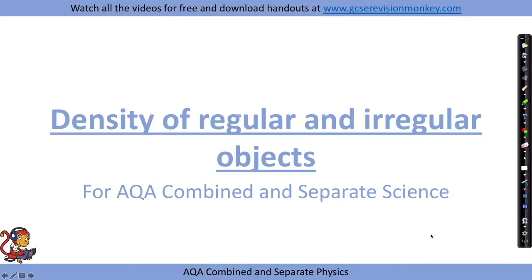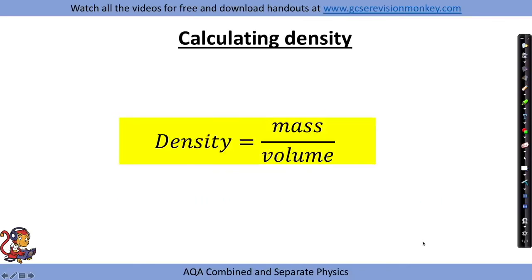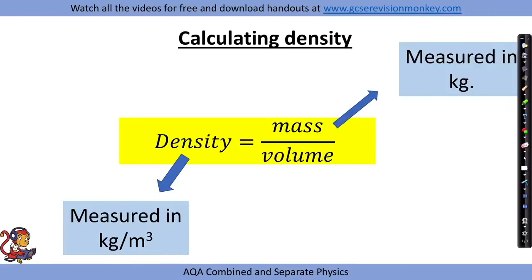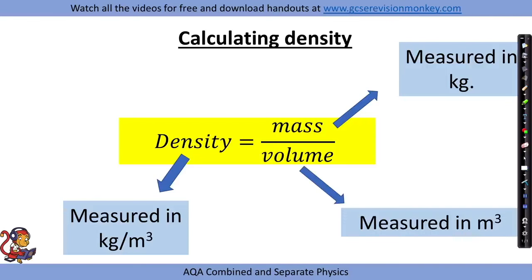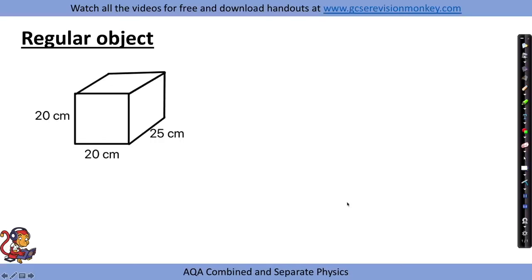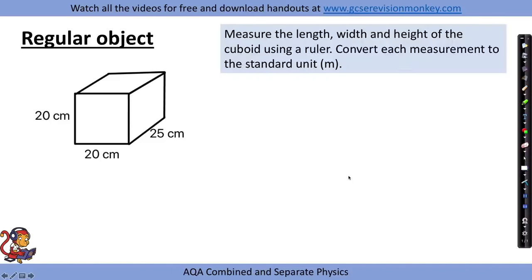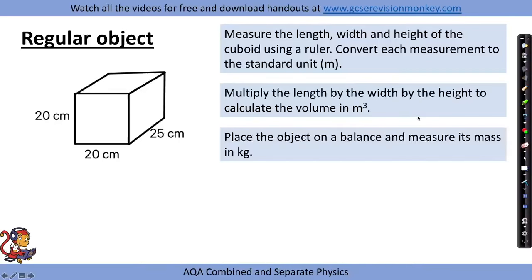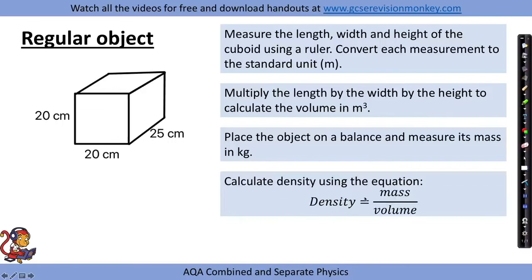For the density of regular and irregular objects required practical, we use the equation: density equals mass divided by volume, where density is in kg/m³, mass is in kilograms, and volume is in metres cubed. For a regular object like a cuboid, measure the length, width, and height using a ruler and convert each measurement to metres, then multiply them together to get the volume in metres cubed. Place the object on a balance and measure its mass in kilograms, then calculate density using the equation.